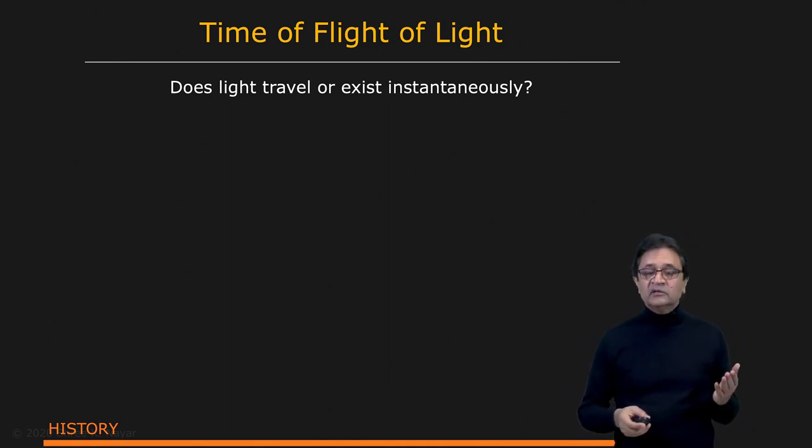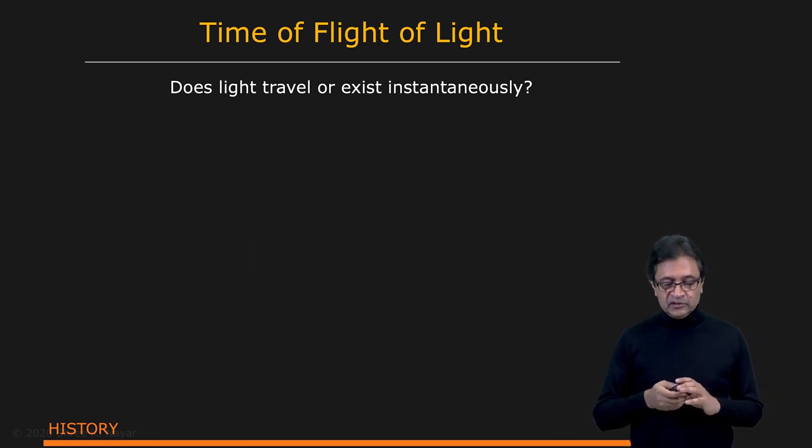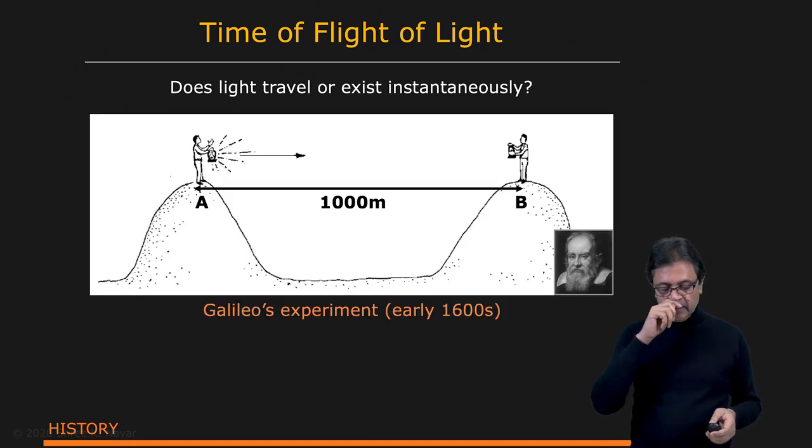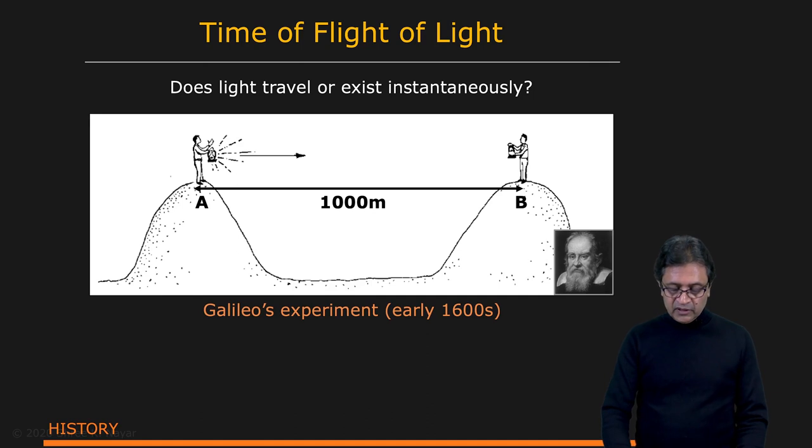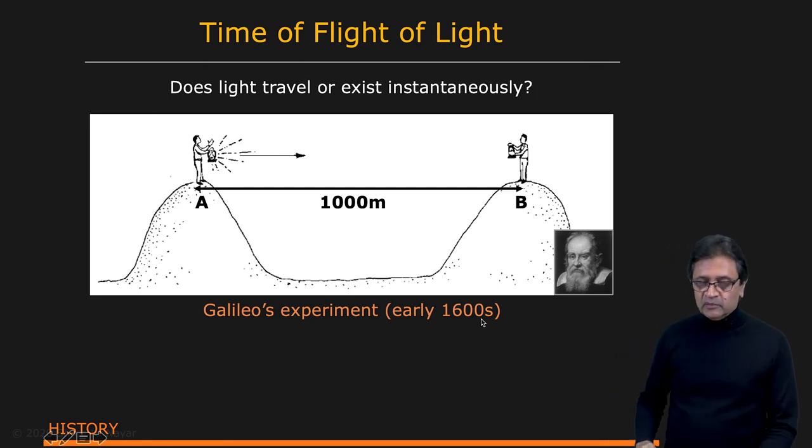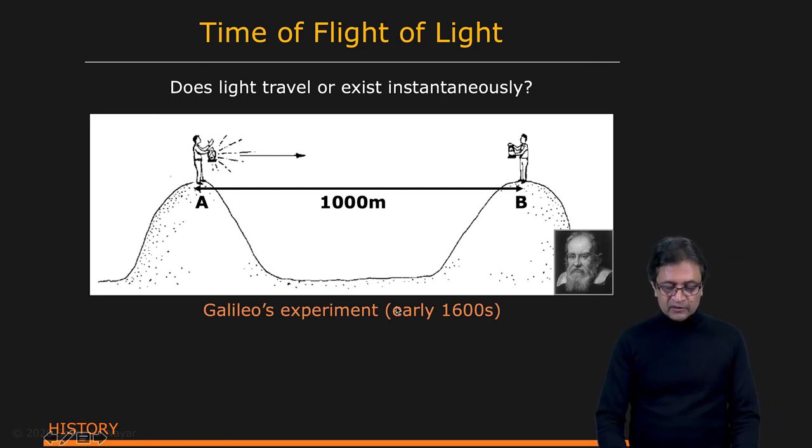To do this, we need to know what the speed of light is. That's essential. I wanted to share with you some of the experiments that were done, the early experiments to measure the speed of light. Fascinating experiments given the context and time when they were done. The first one was by Galileo in the early 1600s, early 17th century. Here is his experiment—it's just fascinating that he would even think about doing this.